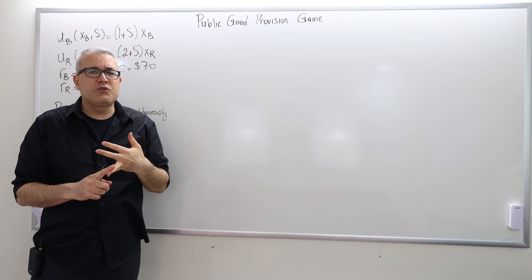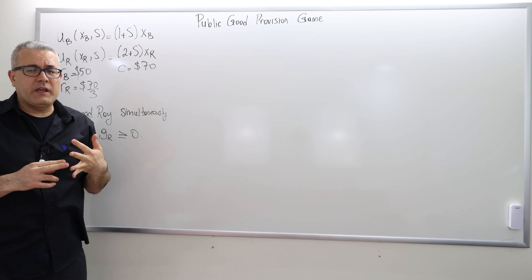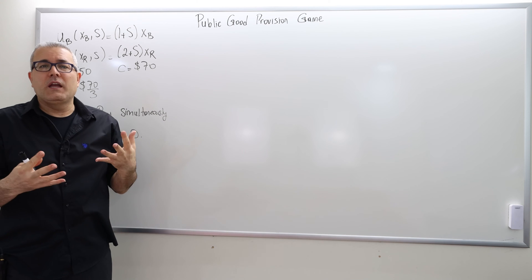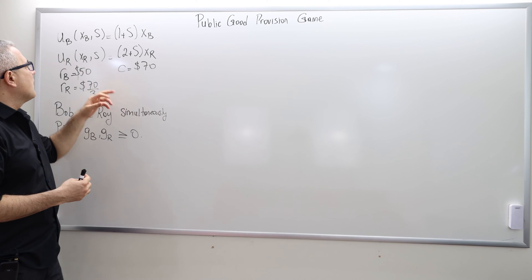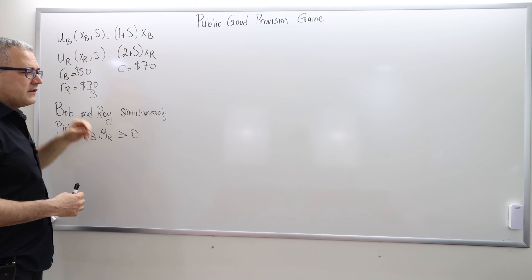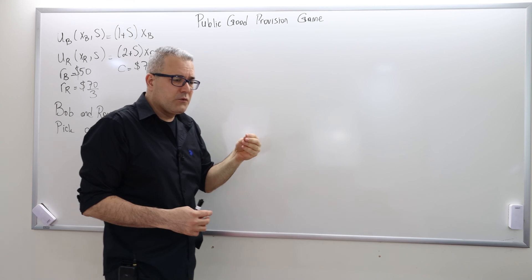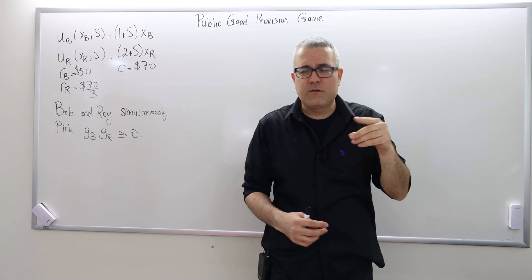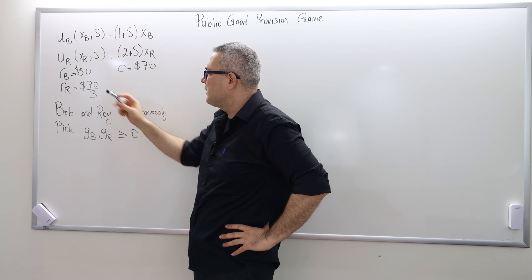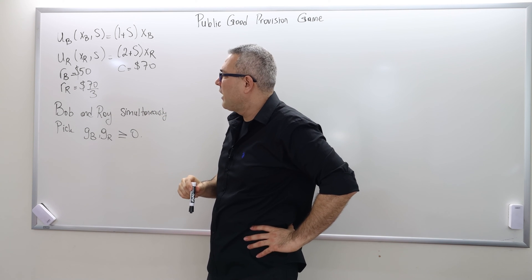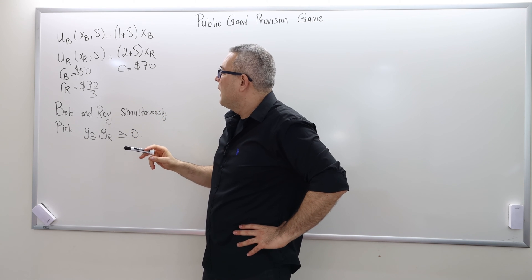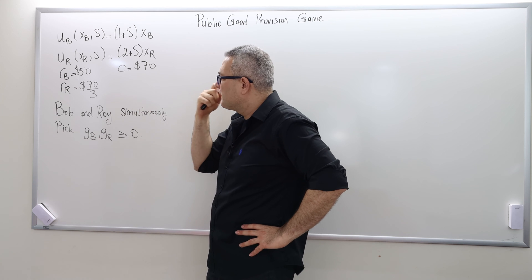The utility functions are as given, so Bob and Ray enjoy more when they consume more on private consumption, and they also enjoy owning the sofa. We already calculated the reservation price, the maximum willingness to pay for Bob and Ray for the sofa. The reservation price for Bob was $50, the reservation price for Ray was $70 divided by 3, approximately $23.